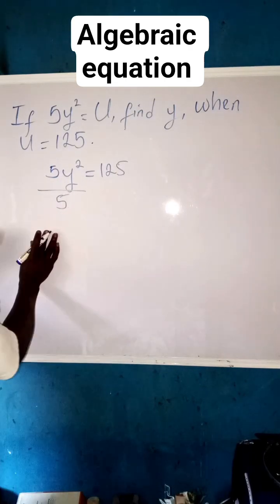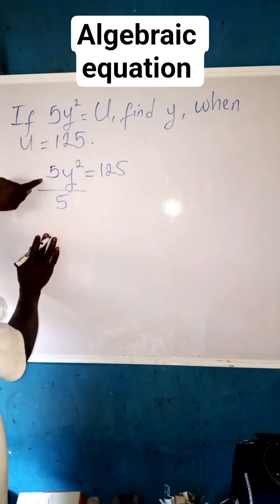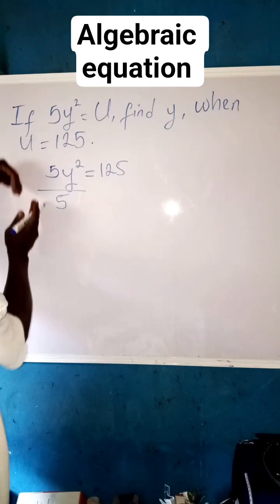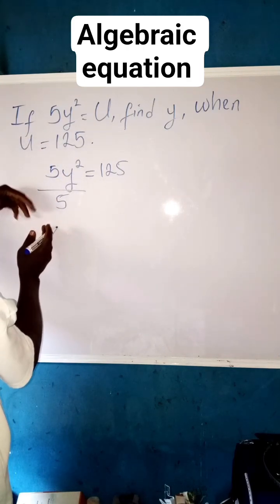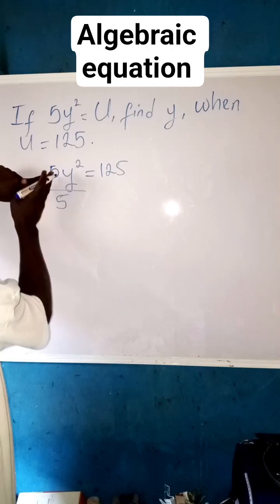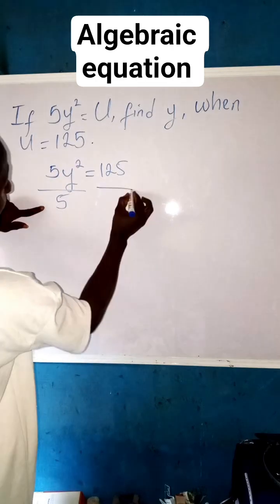So divide both sides by 5 since we are looking for y, not 5y squared. We are removing the obstacle step by step. Divide both sides by 5 here so that y can be free a bit, both sides.